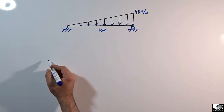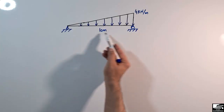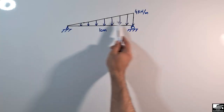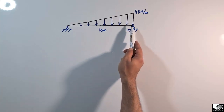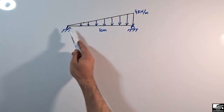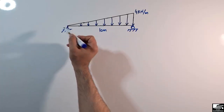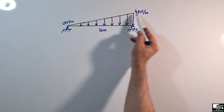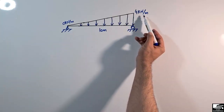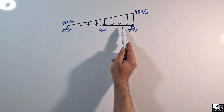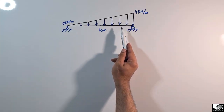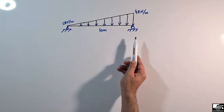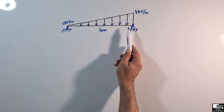Consider a beam of length 10 meters with a uniformly varying load, or triangular load, acting on it. The load has a lower magnitude of 0 kN per meter and a maximum magnitude of 4 kN per meter. We need to convert this load into a pointed or concentrated load, and determine where it will act on the beam.